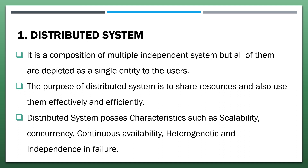Distributed System. It is a composition of multiple independent systems, but all of them are depicted as a single entity to the users. The purpose of a distributed system is to share resources and also use them effectively and efficiently. Distributed systems possess characteristics such as scalability, concurrency, continuous availability, heterogeneity, and independence in failure.